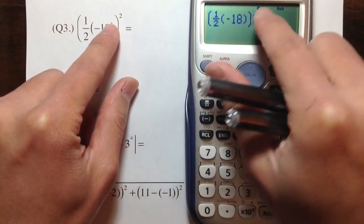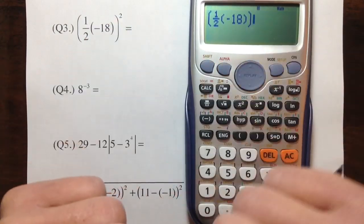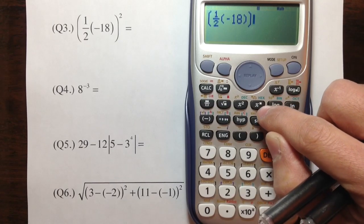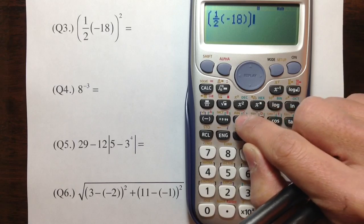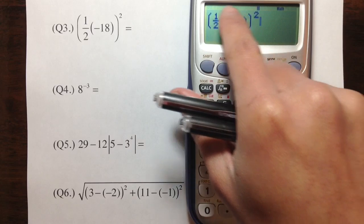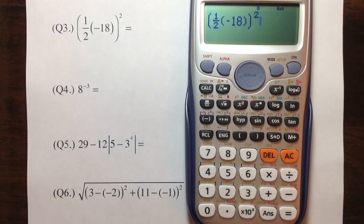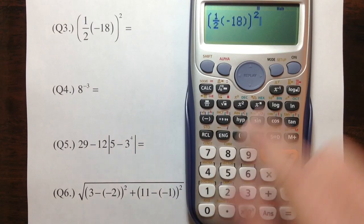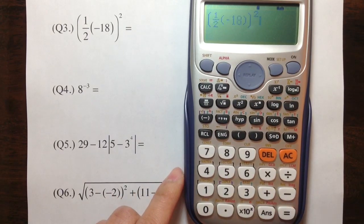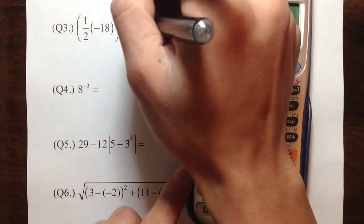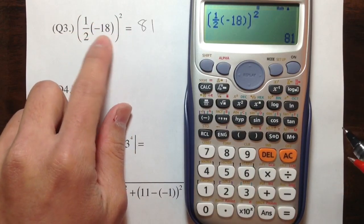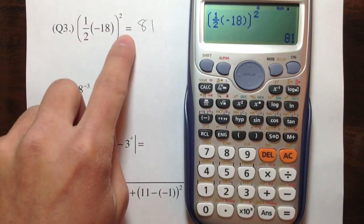Then I need to do this to the second power. There are two ways to do the second power: we can use the power key — the X-to-the-box key we used for question 1 — but we can also use the X-squared key. If I hit this, it generates the square for you, because we use the square function very often — that's why there's a special key for something to the second power. Hit equal, we see 81, and that's the answer. 81.